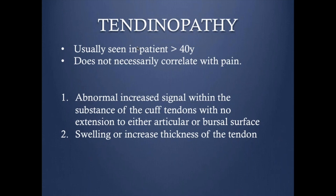How we are going to see it in the imaging: usually there is abnormal increased signal within the substance of the tendon with no extension to either the articular or bursal surface. Usually it has intermediate signal — it is not a fluid signal. Sometimes we see only swelling or increase in the thickness of the tendon, which is enough to call it tendinopathy. So either abnormal internal signal intensity or abnormal morphology or configuration of the tendon.